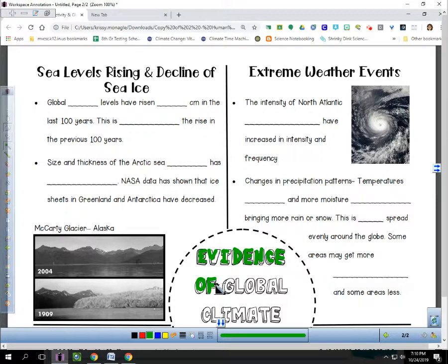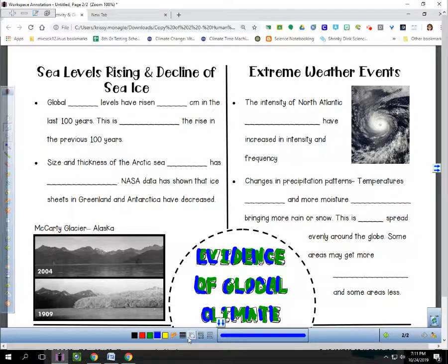So the first thing here, I'm just going to color in where it talks about evidence of global climate change. Just think about the fact that as we are looking at this information, we have been talking about climate change and all of those pieces of evidence that we have. I like to use the green-blue combo because it reminds me of our planet.